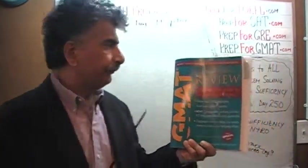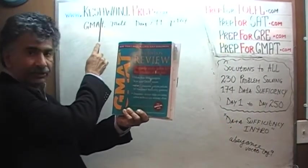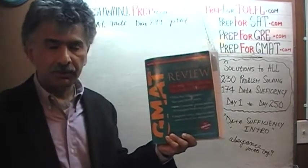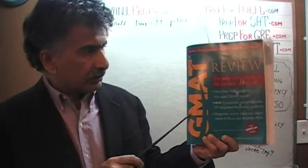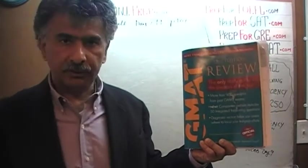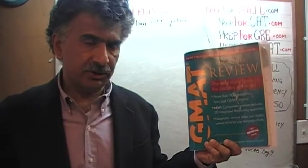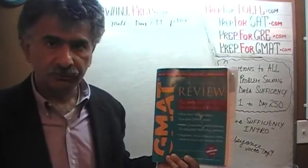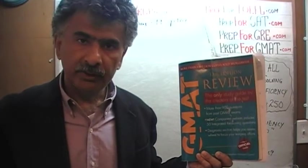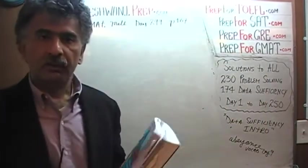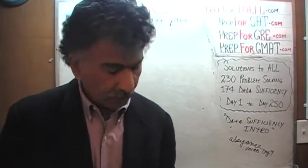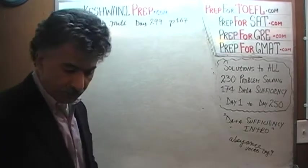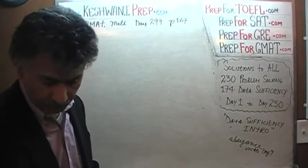Hello, my name is Keshwani, K-E-S-H-W-A-N-I. We are here because we want to prepare for the GMAT. We have been solving GMAT math problems out of this book, GMAT Review, the official guide, 13th edition. If you do not own this book already, purchase one immediately. You are going to need it. This book contains 230 problem solving questions and 174 data sufficiency questions. We have already solved all of these problems. Right now we are in the process of redoing the problems and we are on page 167. Please come to it. Page 167, the very first problem, number 107.